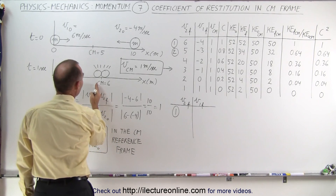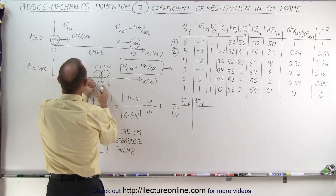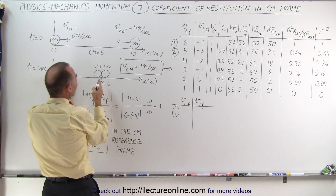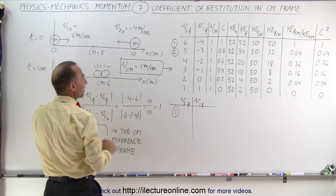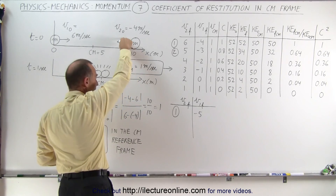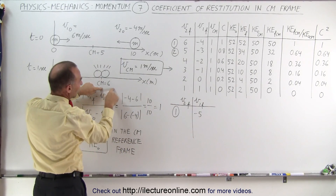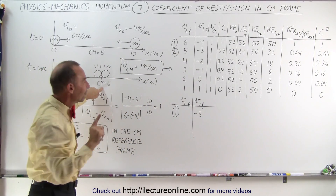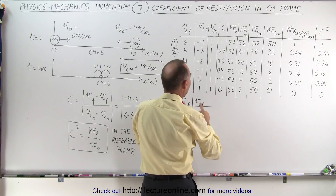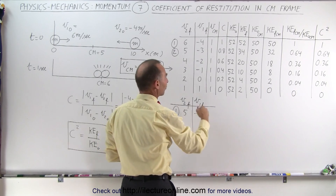The center of mass is moving to the right at 1 m/s, so when V1 final is moving to the left at 4 m/s relative to a fixed reference frame, it's moving at minus 5 m/s relative to the CM frame. V2 final is moving to the right at 6 m/s, but relative to a frame moving right at 1 m/s, it's only 5 m/s. So the kinetic energy before and after is 50 (five squared plus five squared) rather than 52.